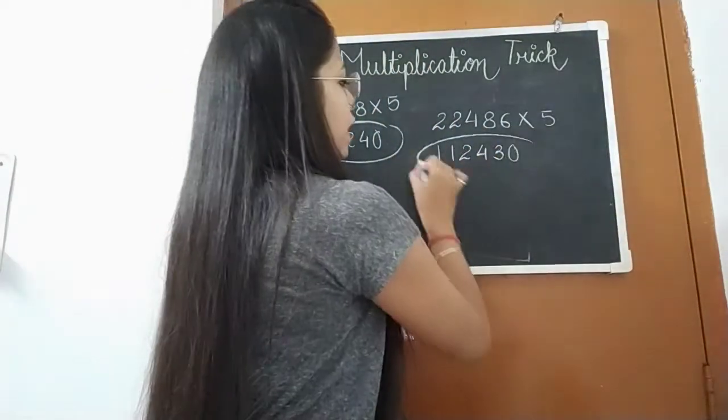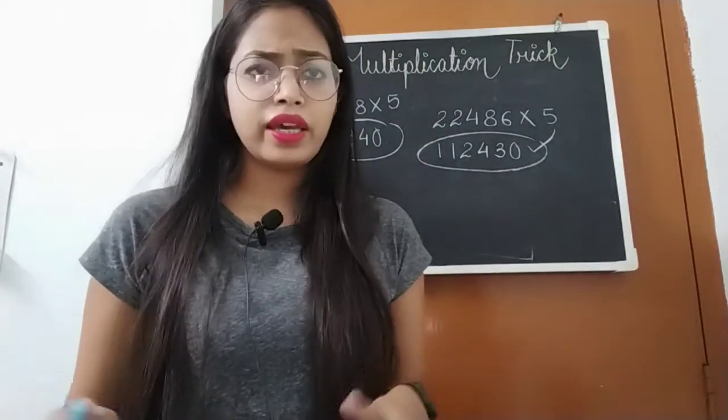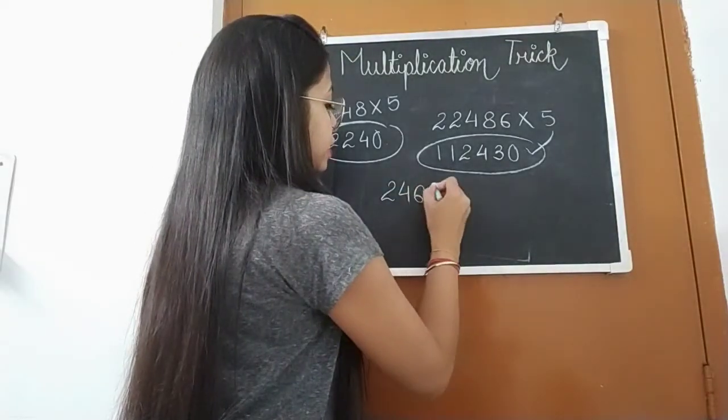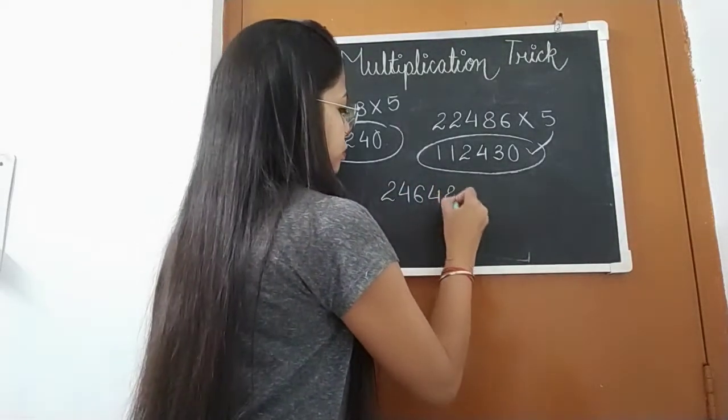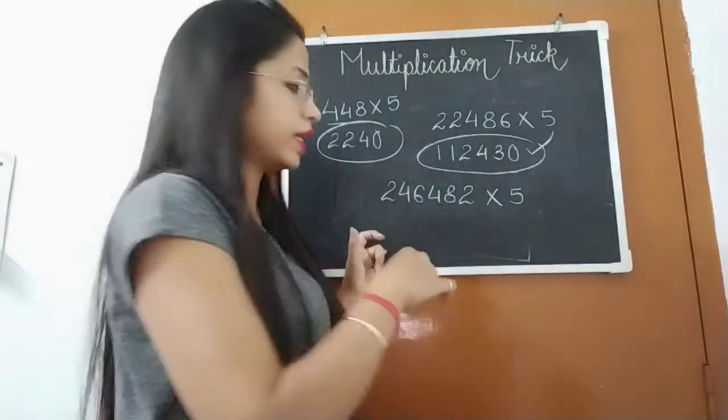So this is our answer. I think it's very easy. Let's see one more example: 246,482 multiplied by 5. Let's do it again.